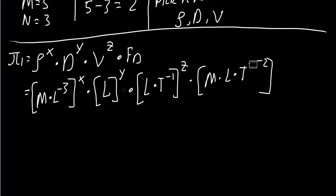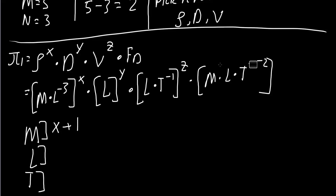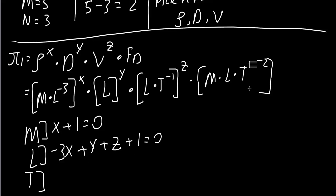Now we group by each primary dimension M, L, and T and set each equal to zero. For mass: x + 1 = 0. For length: −3x + y + z + 1 = 0. For time: −z − 2 = 0.